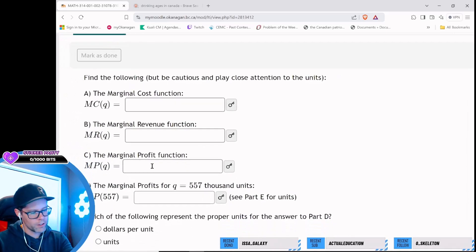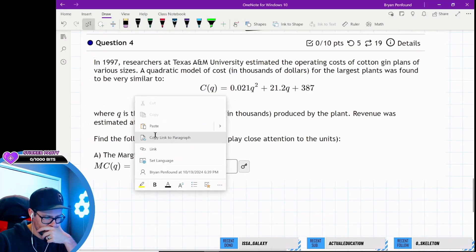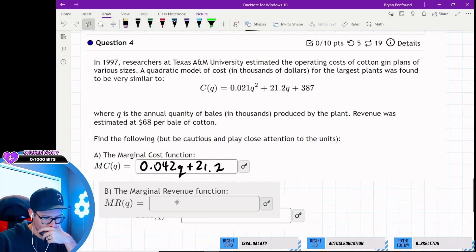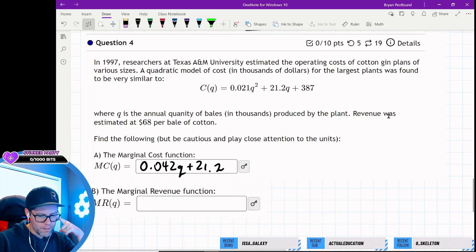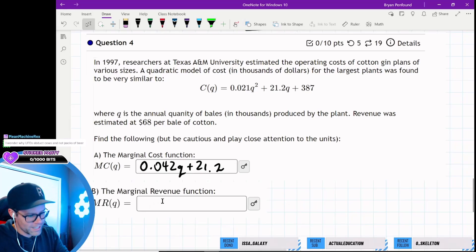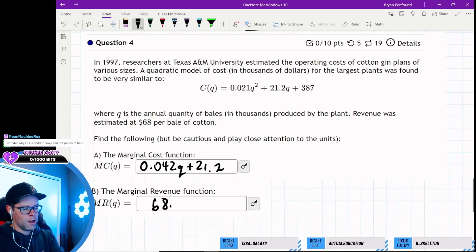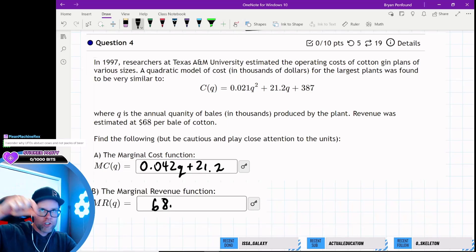They want the marginal revenue function. How do we get that? They're saying revenue was estimated at 68 per bale of cotton. So isn't the marginal revenue just 68? Isn't it just 68? Because every additional bale gives me $68 roughly in revenue. I think that's what marginal revenue means.